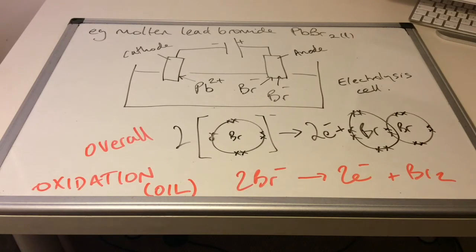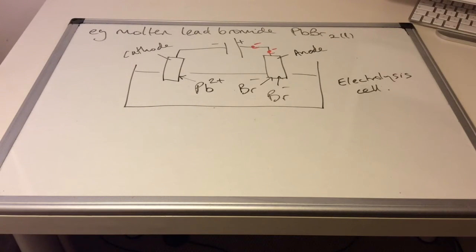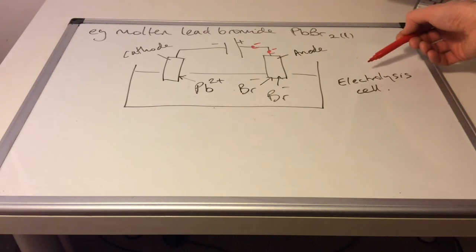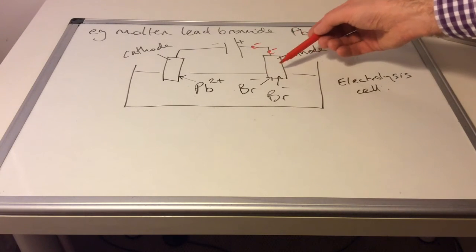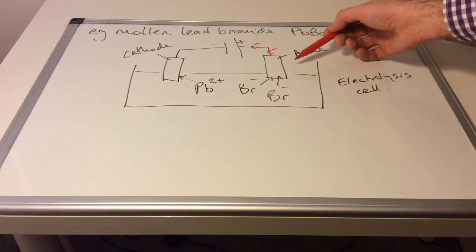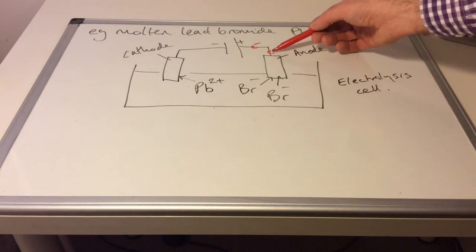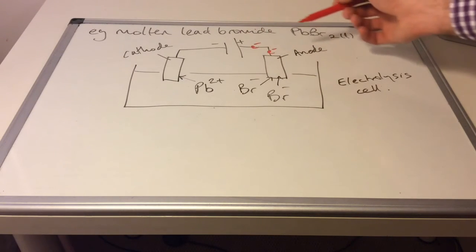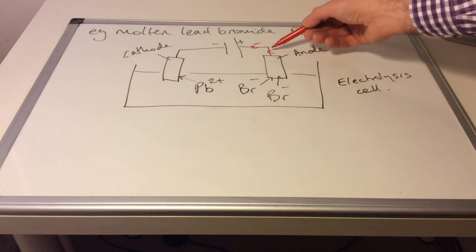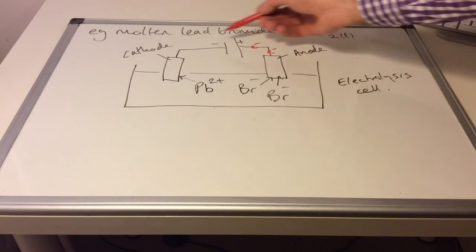And if you just think about the word OIL, it can help you remember that oxidation is loss of electrons. So you can see I've added those two electrons onto the diagram of the electrolysis cell. And each bromide ion gives up its outer electron and they would start to move around the circuit.